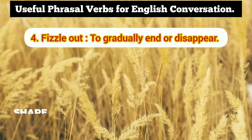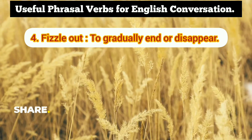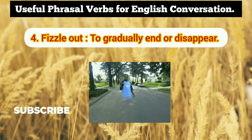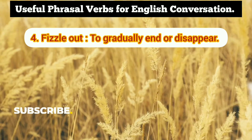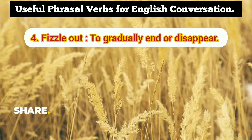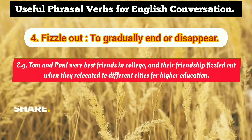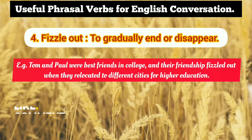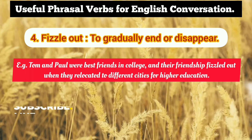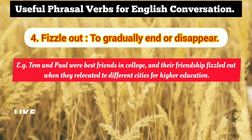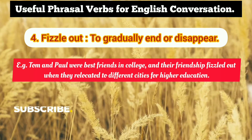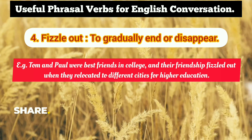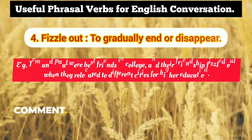The fourth phrasal verb is 'fizzle out.' Fizzle out means to gradually end or disappear — to vanish. It is used in the context of relationships as well. Example: Tom and Paul were best friends in college, and their friendship fizzled out when they relocated to different cities for higher education — meaning their friendship gradually weakened and ended.